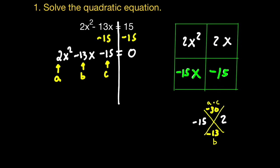I'll zoom in on the bottom row — negative 15x and negative 15 — and factor out the GCF, which is negative 15. Next, I'll zoom in on the right column and get the GCF between 2x and negative 15, which is 1. To find the two missing values I can guess strategically: negative 15 times what gives negative 15x? That's x. And x times what gives 2x squared? That's 2x. We can verify: 2x times x is 2x squared, 2x times 1 is 2x, negative 15 times x is negative 15x, and negative 15 times 1 is negative 15.